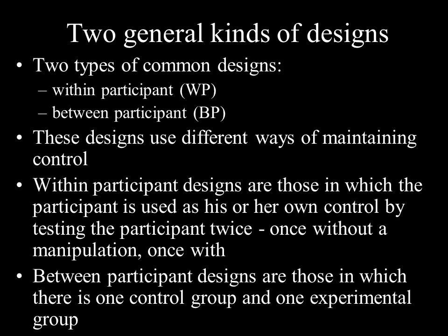The reason why it's important to talk about these two kinds of designs is that they represent two different ways of maintaining control. Within Participant designs are those where a participant serves as their own control, and the way that they do that is that you test a person twice — once with a manipulation and once without. Whereas Between Participant designs are those where there's one control group and one experimental group, and control is exerted by randomizing who goes into the control group and who goes into the experimental group.